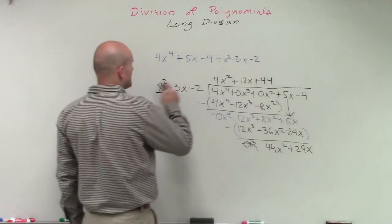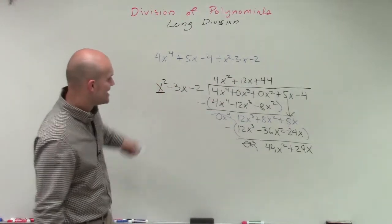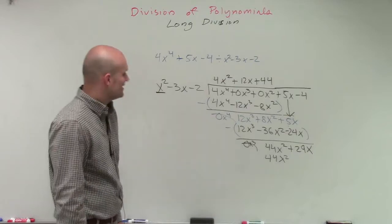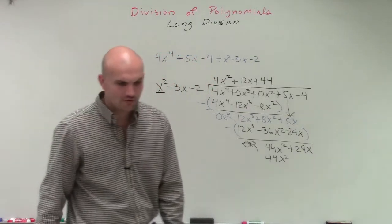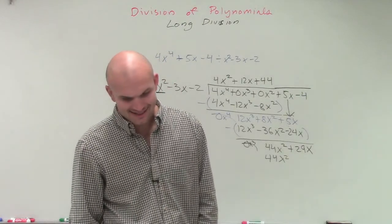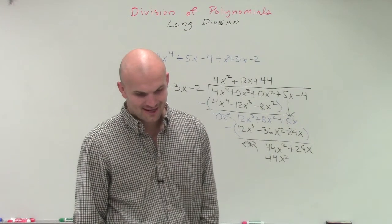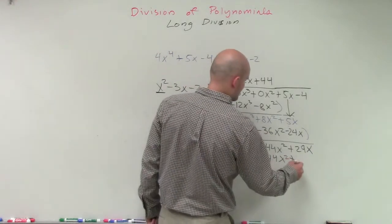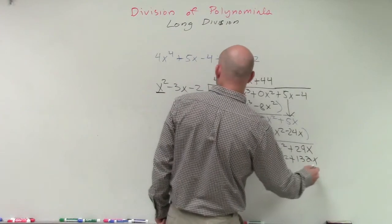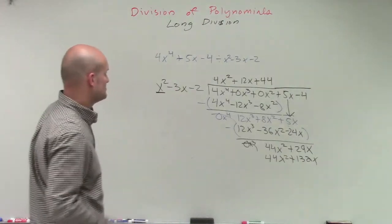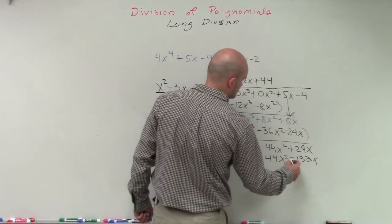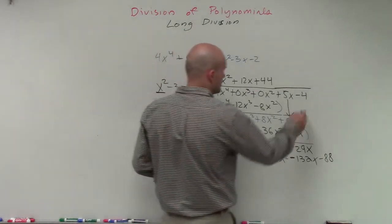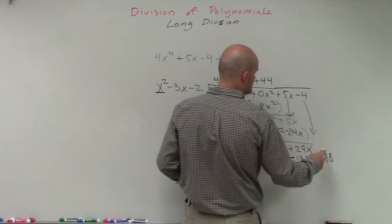Now I need to take 44 and multiply by each one of my terms. So 44 times x squared is going to be a positive 44x squared. 44 times negative 3x is going to be, let's see here, that'd be 44, 88, so that'd be 132. So that would be negative 132x. And then 44 times negative 2 will be a negative 88. Now, I need to bring down this negative 4. So I can subtract my rows.